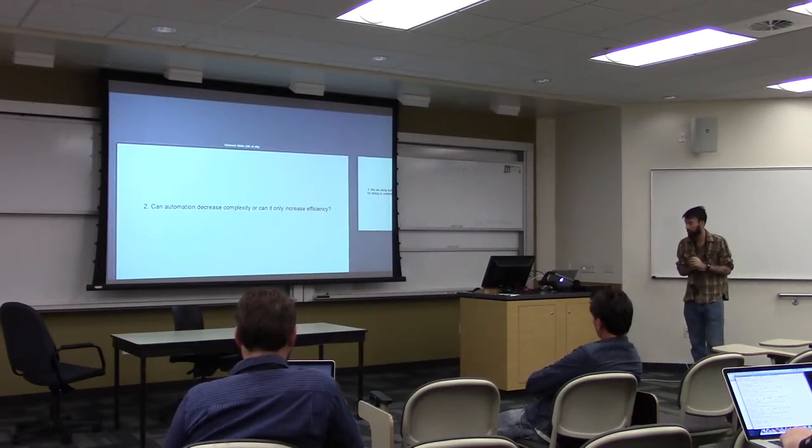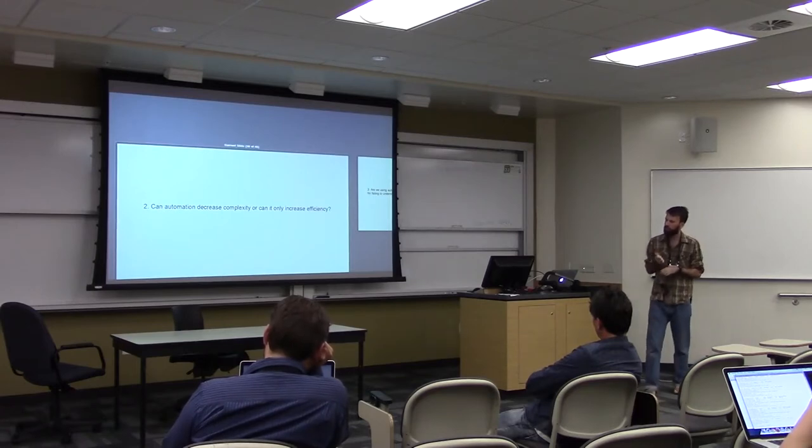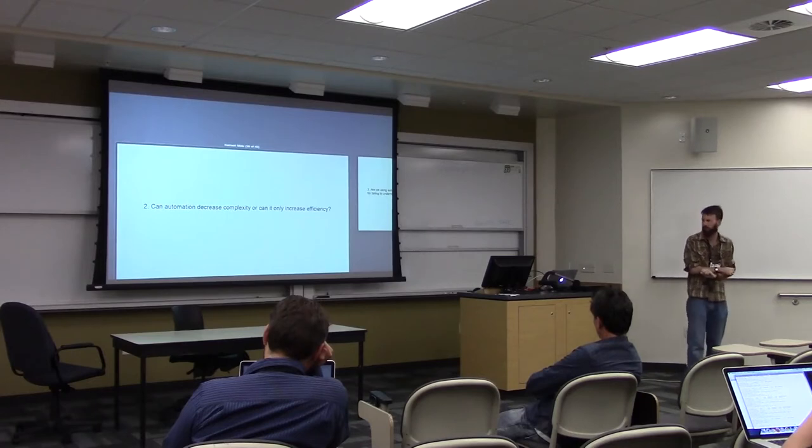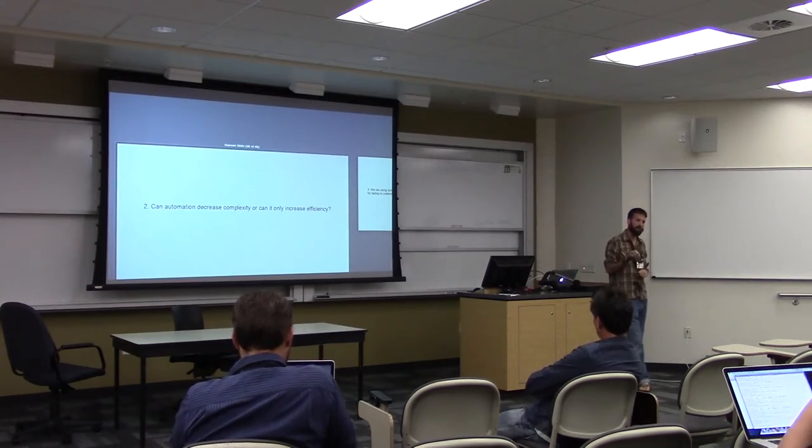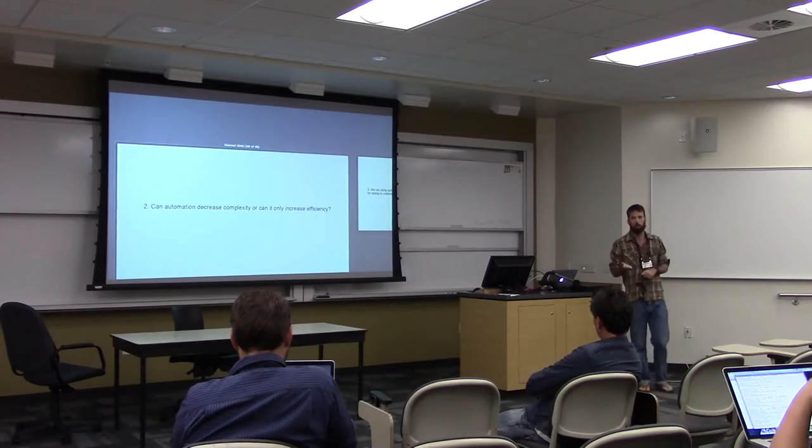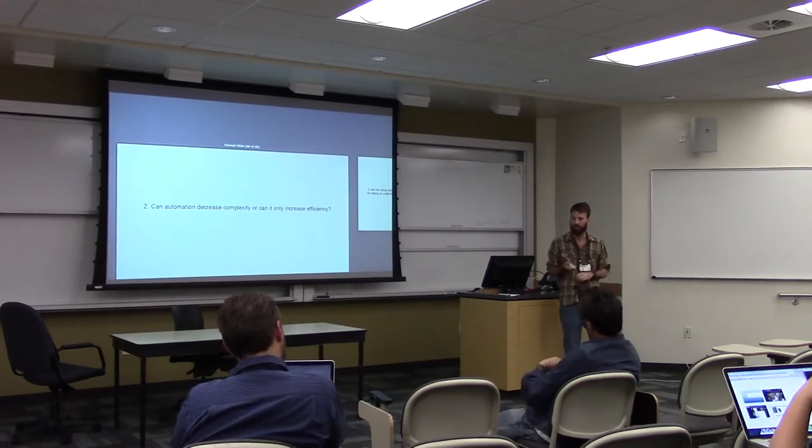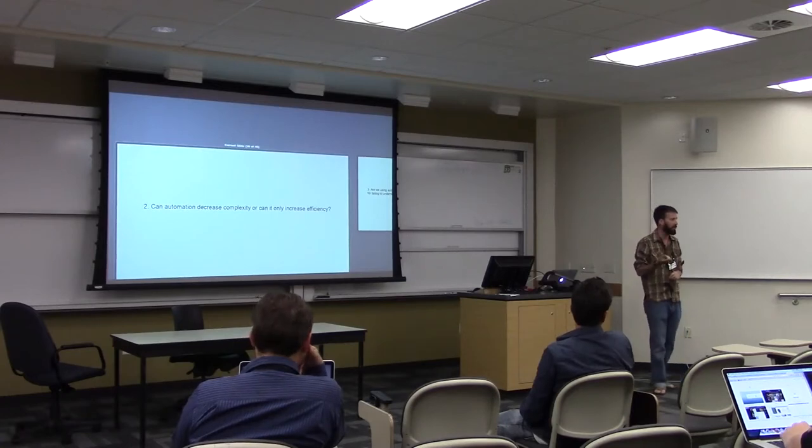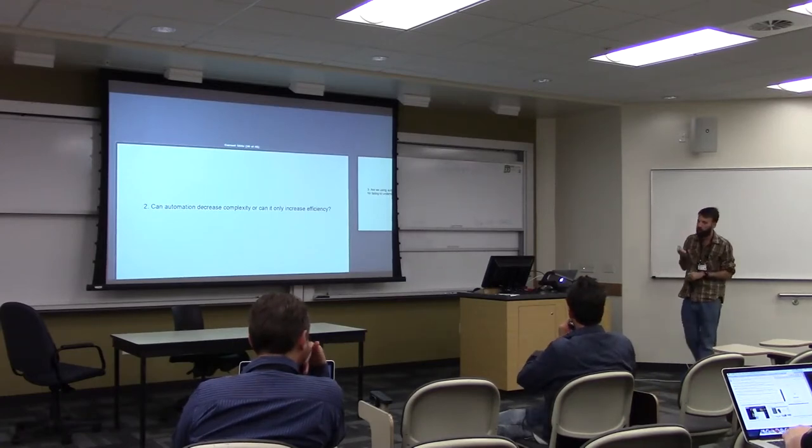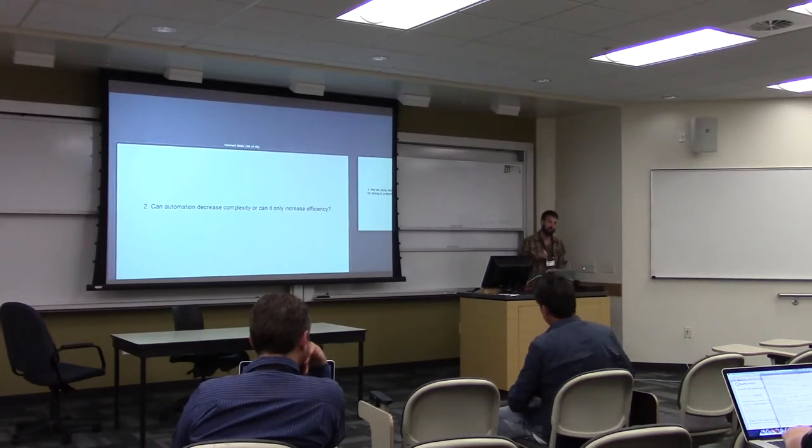Secondarily, and actually this came from Luke Kanies over at Puppet, who's a brilliant thinker and a very nice person. And one of the things that he talks about is this question of whether automation can decrease complexity or whether it can only increase efficiency. And I think this is a really important question because especially in modern DevOps right now, there is this idea that we can decrease complexity. That if only we use the right tools, that things will suddenly become less complex. And I think that's a premise that's worth challenging.